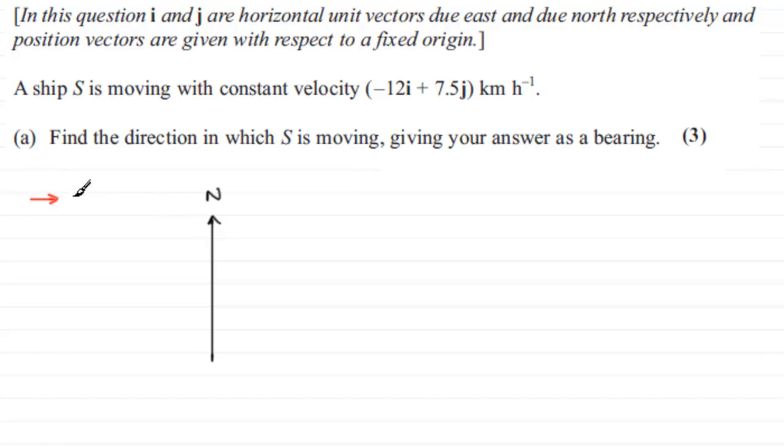I goes due east and we'll mark that in like so, and J is a unit vector in the northerly sense.